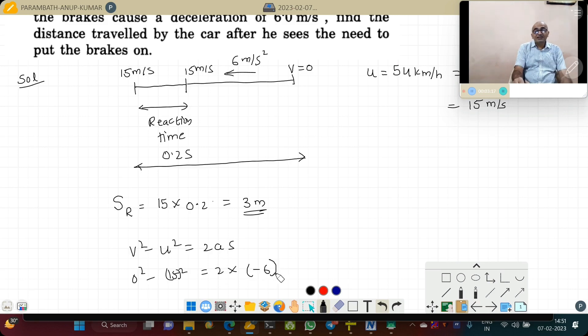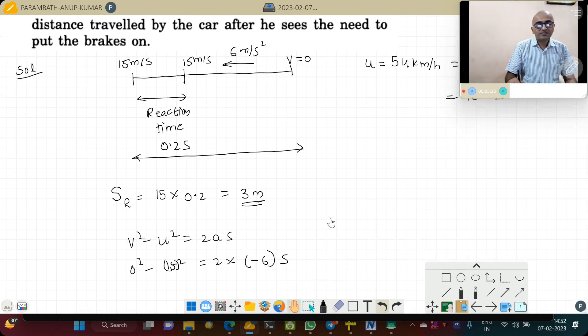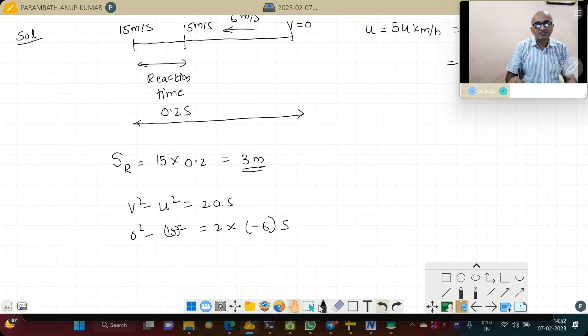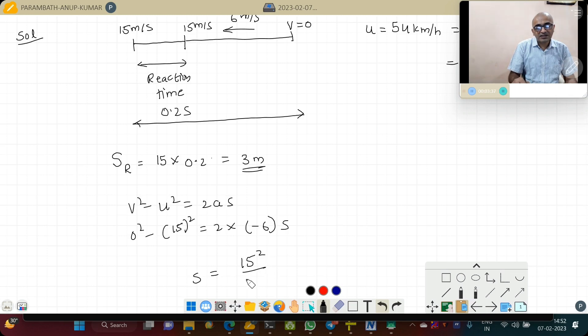That is a deceleration, therefore minus 6, and distance covered during that. So I have now this, I am rectifying it so that you can see clearly, this is 15 square.